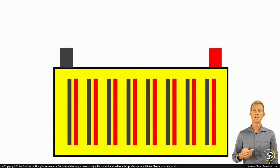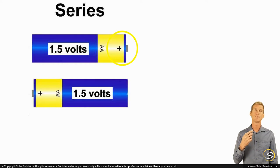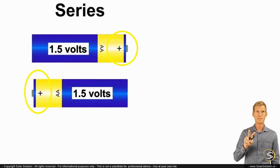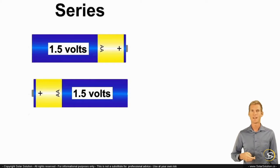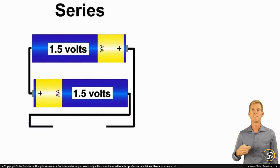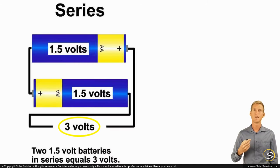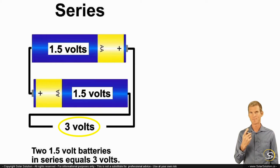As a refresher, let's look at the differences between series and parallel connection. Series connection is whereby you connect the positives to the negatives. So if you place two conventional AA batteries next to each other with the plus and minus the other way around, and connect the positive to the negative to make a small circuit, these two 1.5-volt batteries would create one system which produces 3 volts. So if you place batteries in series, you increase the voltage but the amperage stays the same.